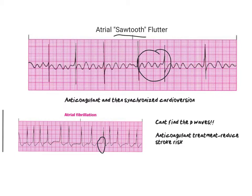If it's been longer than 48 hours, you have to wait a certain amount of time and make sure they have anticoagulants, because cardioversion can cause a stroke by throwing a clot — which is why we need anticoagulants. People with atrial fibrillation will normally go on anticoagulants because this decreases their risk of stroke. In atrial fibrillation, the heart is pumping so fast that it's not letting all the blood through, so the blood can clot, which can lead to stroke or pulmonary embolism.